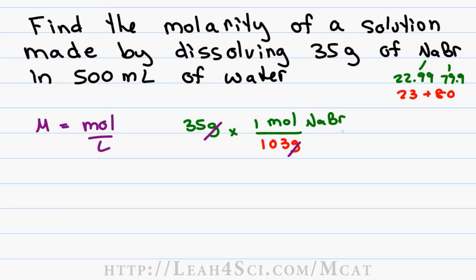Grams cancel giving us a molar value and then we want to divide all of that by the volume. We have 500 milliliters times the ratio of 1 liter over 1000 milliliters. Use the trick of canceling out zeros. In this case we have 5 over 10 or 1 over 2. Our ultimate calculation is 35 times 1 over 103 divided by 1 over 2. If you have to divide fractions you multiply by the reciprocal so we'll flip 1 over 2 to become 2 over 1.